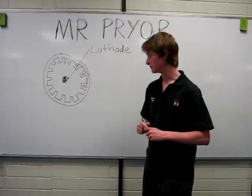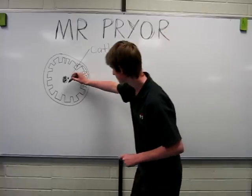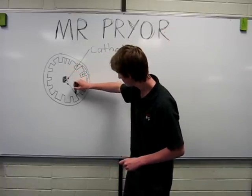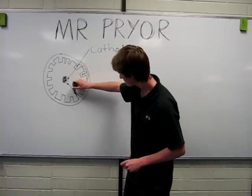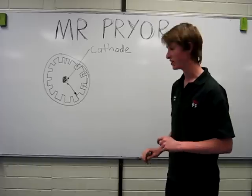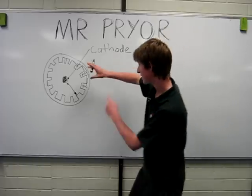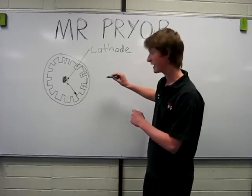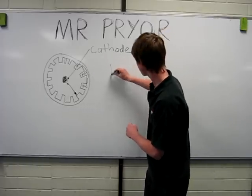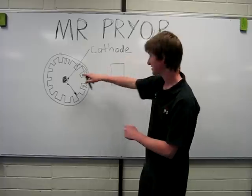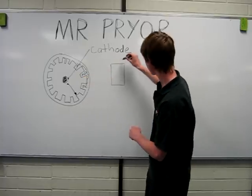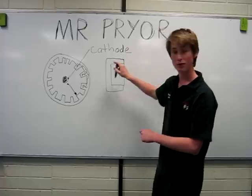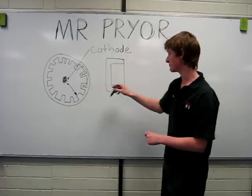But that is not all. So in theory the electrons would go like this towards the anode. But there's also, if we have a side view of this, a permanent magnet. So that's a side view, and we have a permanent magnet wrapped around it.